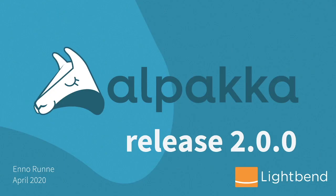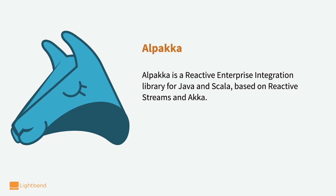Alpaca connects ACCA streams to other technologies and tries to apply the same properties to those technologies. Alpaca is a reactive enterprise integration library for Java and Scala based on reactive streams, giving us endpoints for ACCA streams.